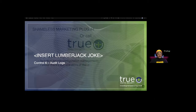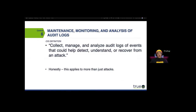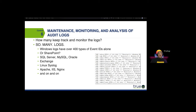Control 6: audit logs. Collect, manage, and analyze audit logs of events that could help detect, understand, or recover from an attack — honestly this applies to more than just attacks. Logs are everywhere: Windows event logs, IIS logs, Apache logs, syslog, etc. Logs are critical for system security — not only for attacks, but also for system and application failure, which is important for uptime. What happened, why did it happen, how did it happen, when did it happen — all of this information is super important.